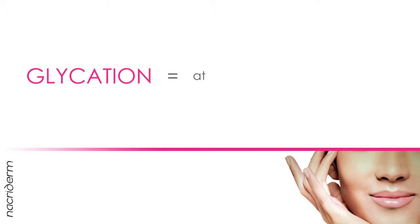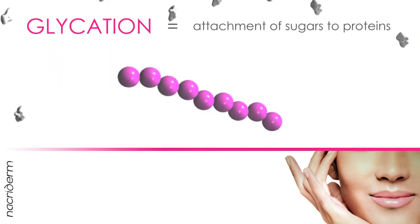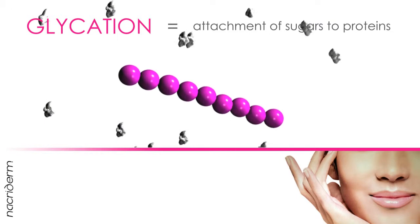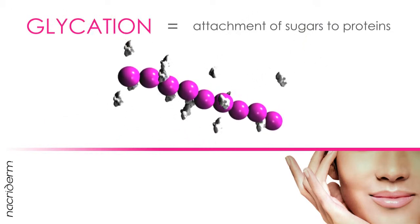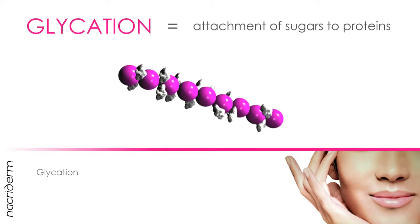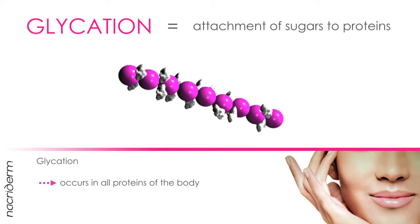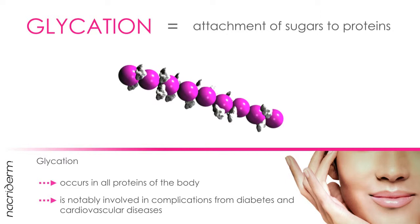Glycation, also known as the Maillard reaction, is a chemical reaction resulting from sugars attaching to proteins. Glycation occurs in all proteins of the body. It is notably involved in complications from diabetes and cardiovascular diseases.